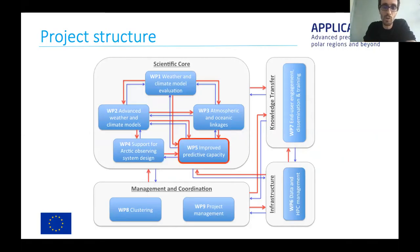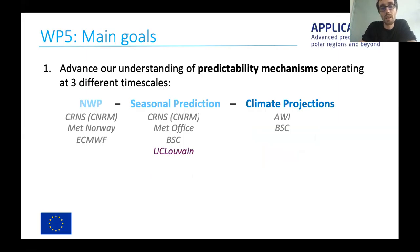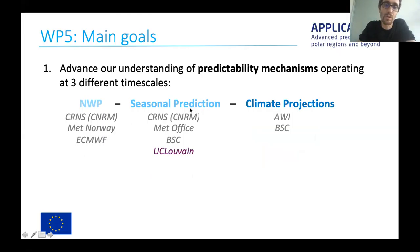Now I'll focus on work package five and explain briefly what we are doing and what the main goals are. The first goal is to advance the understanding of the predictability mechanisms operating at three different timescales. We have numerical weather predictions covering the daily to weekly timescales, with three meteorological centers involved. Then seasonal predictions covering months to seasons, with three modeling centers and the University of Louvain running statistical predictions. And finally, climate projections to cover the very long timescales, with two centers involved.